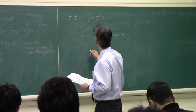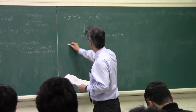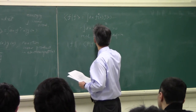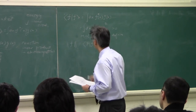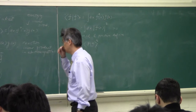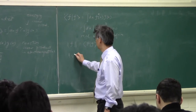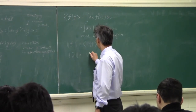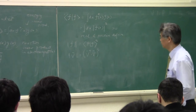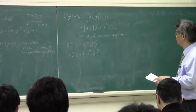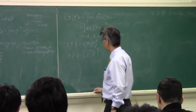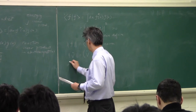So this can be used as a measure of length. You can define a norm of a function to be the square root of this inner product, which is very similar to how we define the length of a vector in linear algebra. In linear algebra, the norm of a vector v is the square root of v-dagger times v. Because of that, this is called a norm, and you can use it to form a distance between two functions.